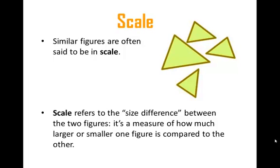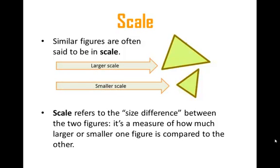For example, if we focus on the bottom two triangles, then the first one is a larger scale version of the second one, or the second one could be considered a smaller scale version of the big one.